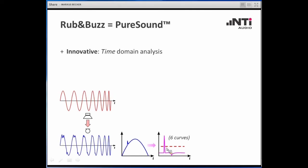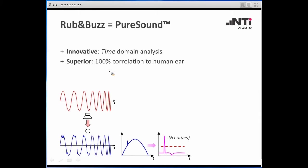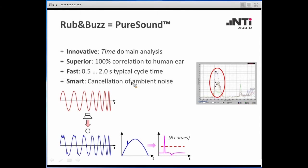By applying a simple threshold, you can determine whether the disturbing part is audible and whether it can be used to reject faulty speakers. We execute this analysis in 6 different frequency bands, and by that means we achieve a perfect correlation to the human ear. Furthermore, the PureSound approach is very fast — typically 0.5 to 2 seconds, with 1 second as an average. Only very large loudspeakers may need a slightly longer cycle time, but in 1 second you can typically achieve a full measurement of all speaker parameters, including Rub & Buzz.